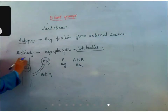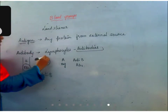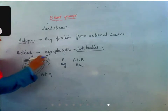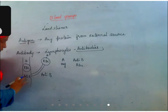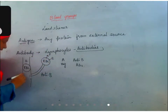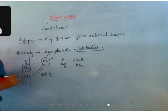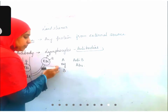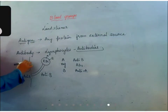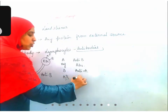For blood group B: if you administer A blood group, the body will immediately produce anti-A antibodies. If you administer B blood group, no antibodies are produced. If you administer AB blood group, the body produces only anti-A antibodies, since B is already present. That is why for blood group B, the antigen is B and the antibodies are anti-A. For AB blood group, if the person has both A and B antigens, no antibodies will be produced, so AB and AB are antigens with no antibodies.